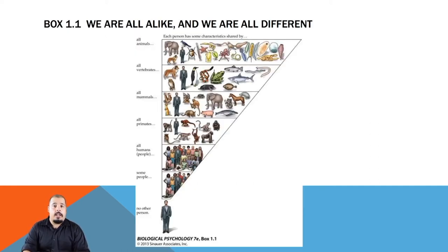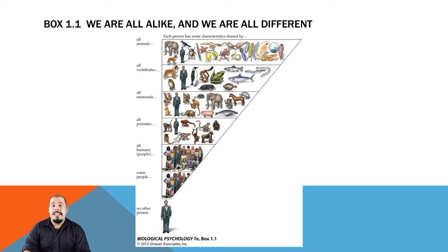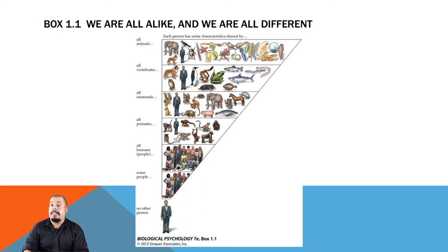Despite what people may commonly think, we do have similarities with other species — some species more than others — but we are all unique individuals who share common traits. In this diagram, we have similarities with a penguin: we both have a vertebral column, must ingest organic nutrients to survive, nurse our young, and more. But there are many differences between species, including intelligence and having opposable thumbs.